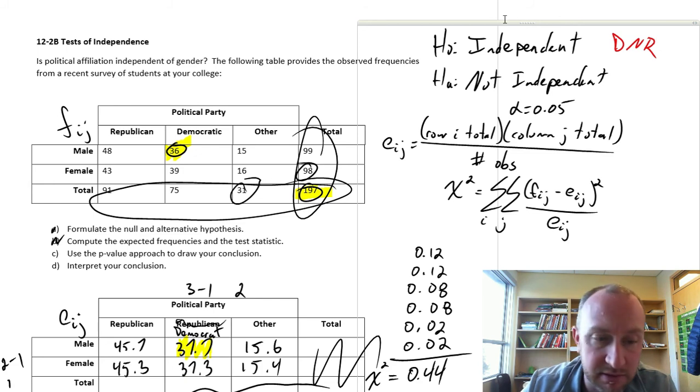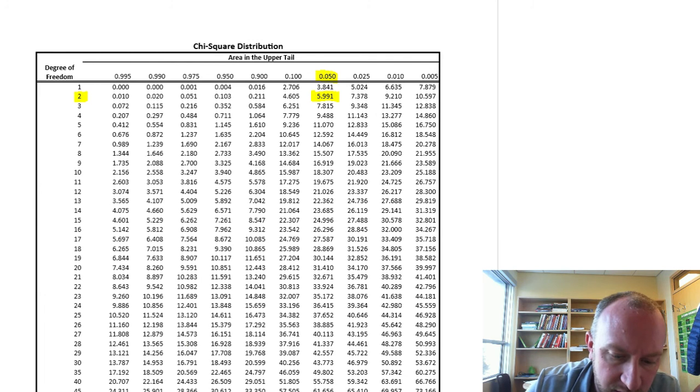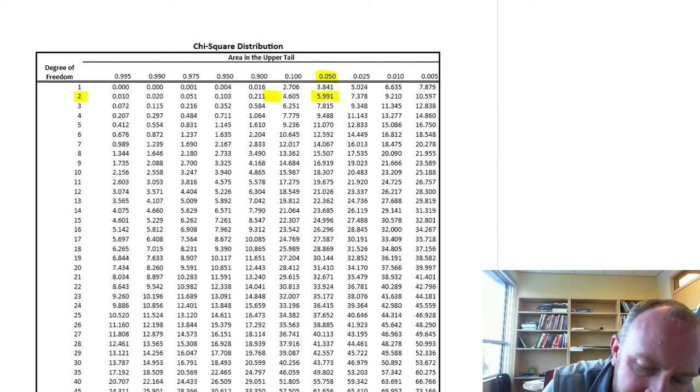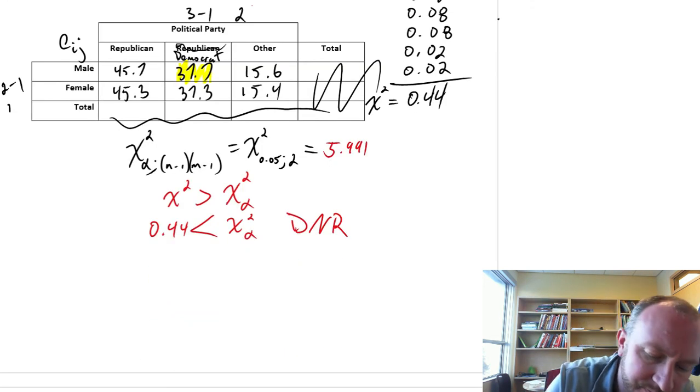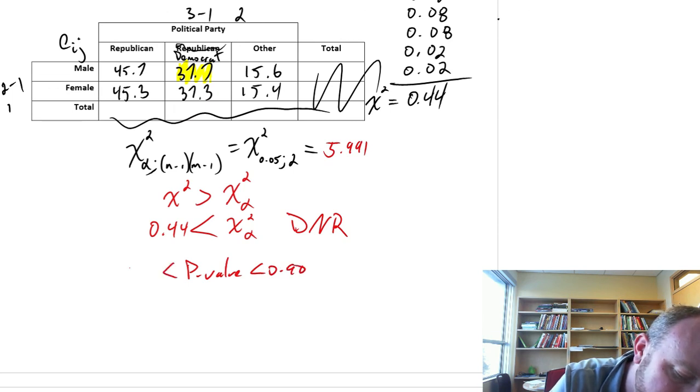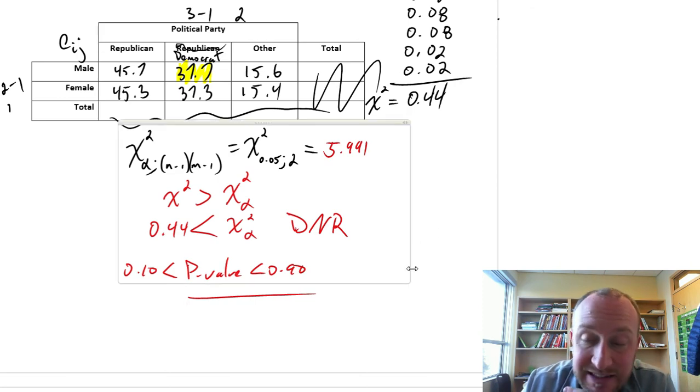Let's get our p-value for this, at least a p-value range. So 0.44. The best we can do is the p-value is going to be something between 0.1 and 0.9. So a pretty wide range. Our p-value is something less than 0.9, greater than 0.1, probably closer to the 0.9 in that range. But still, it's certainly greater than our level of significance.